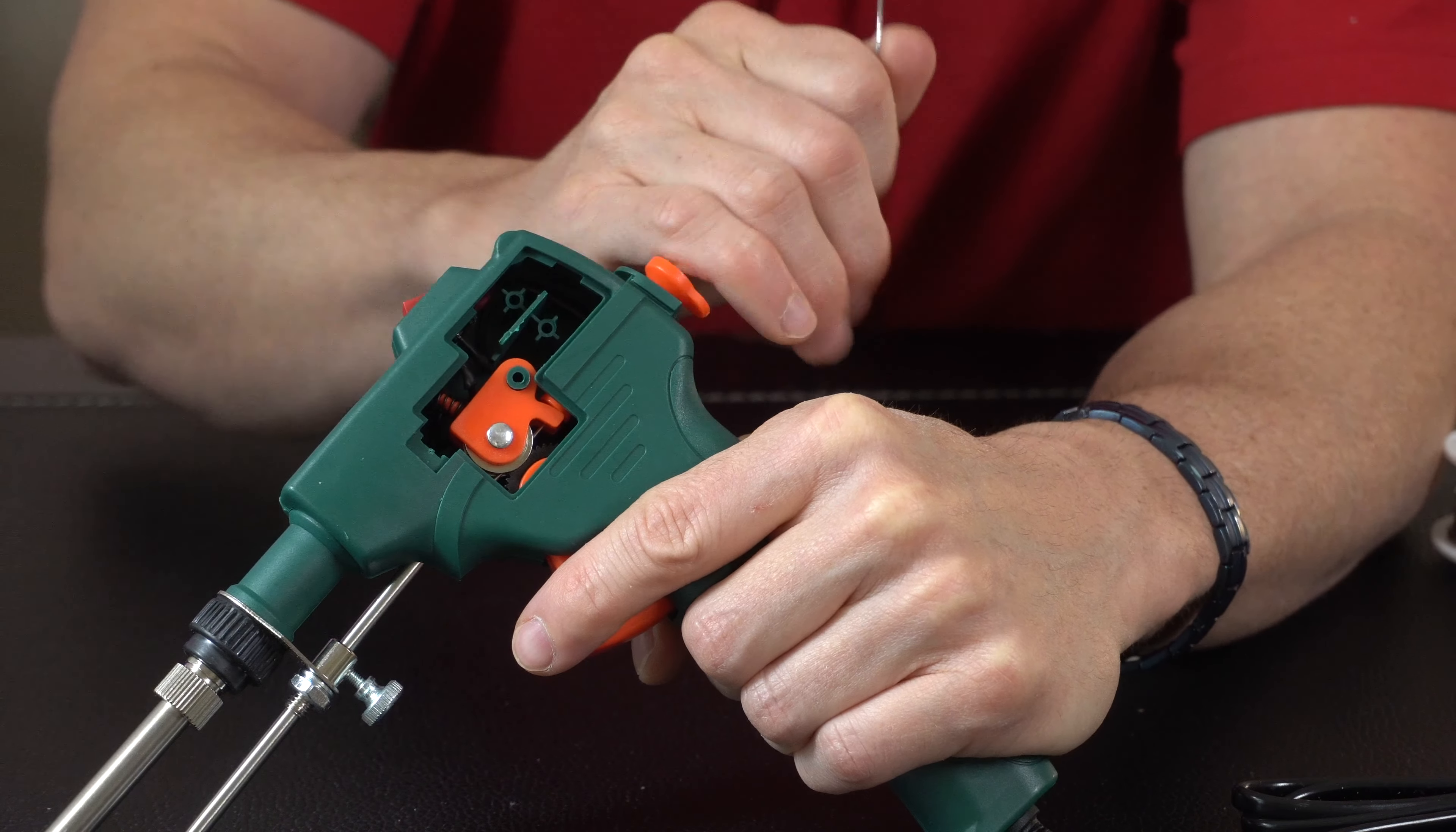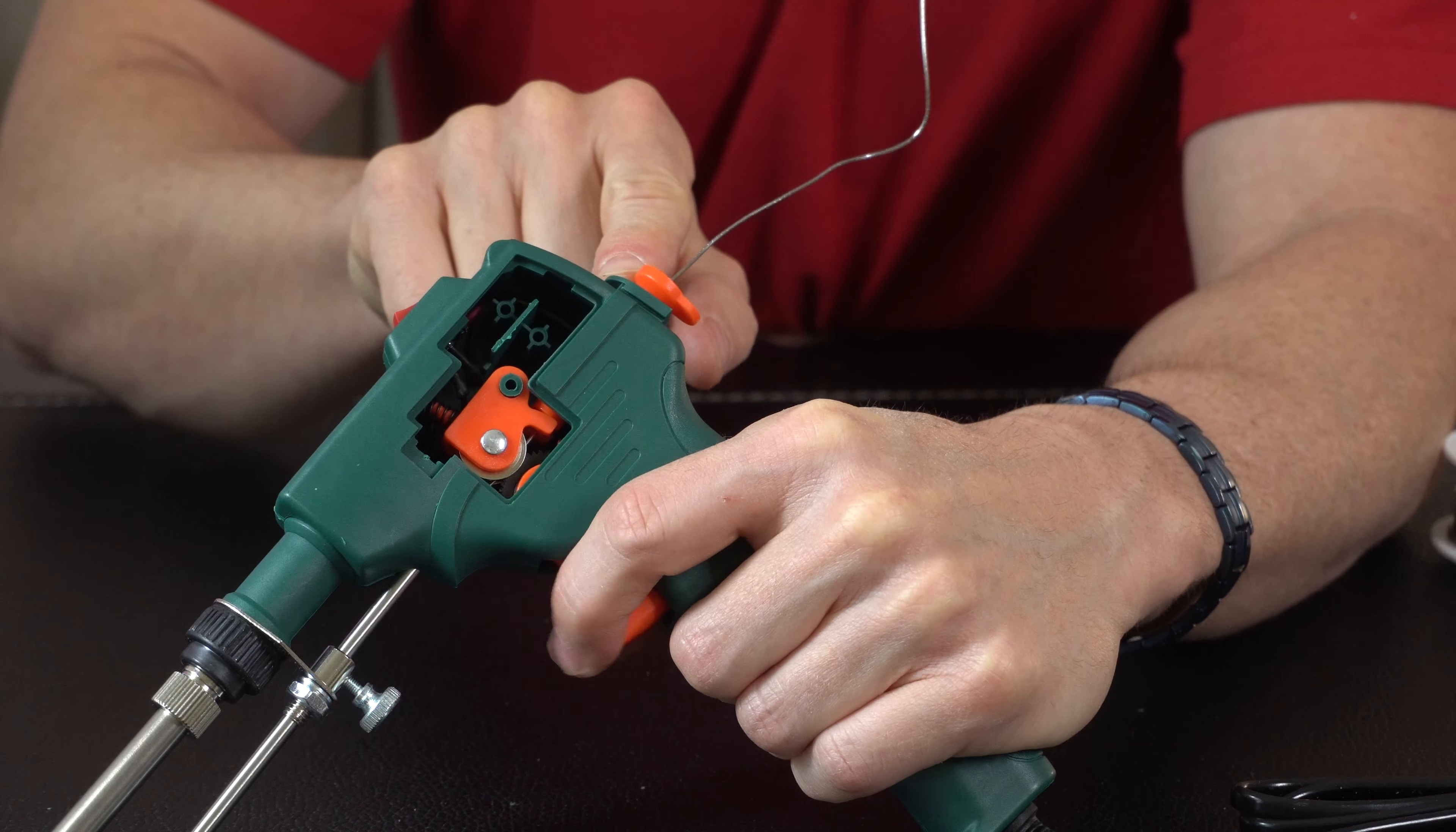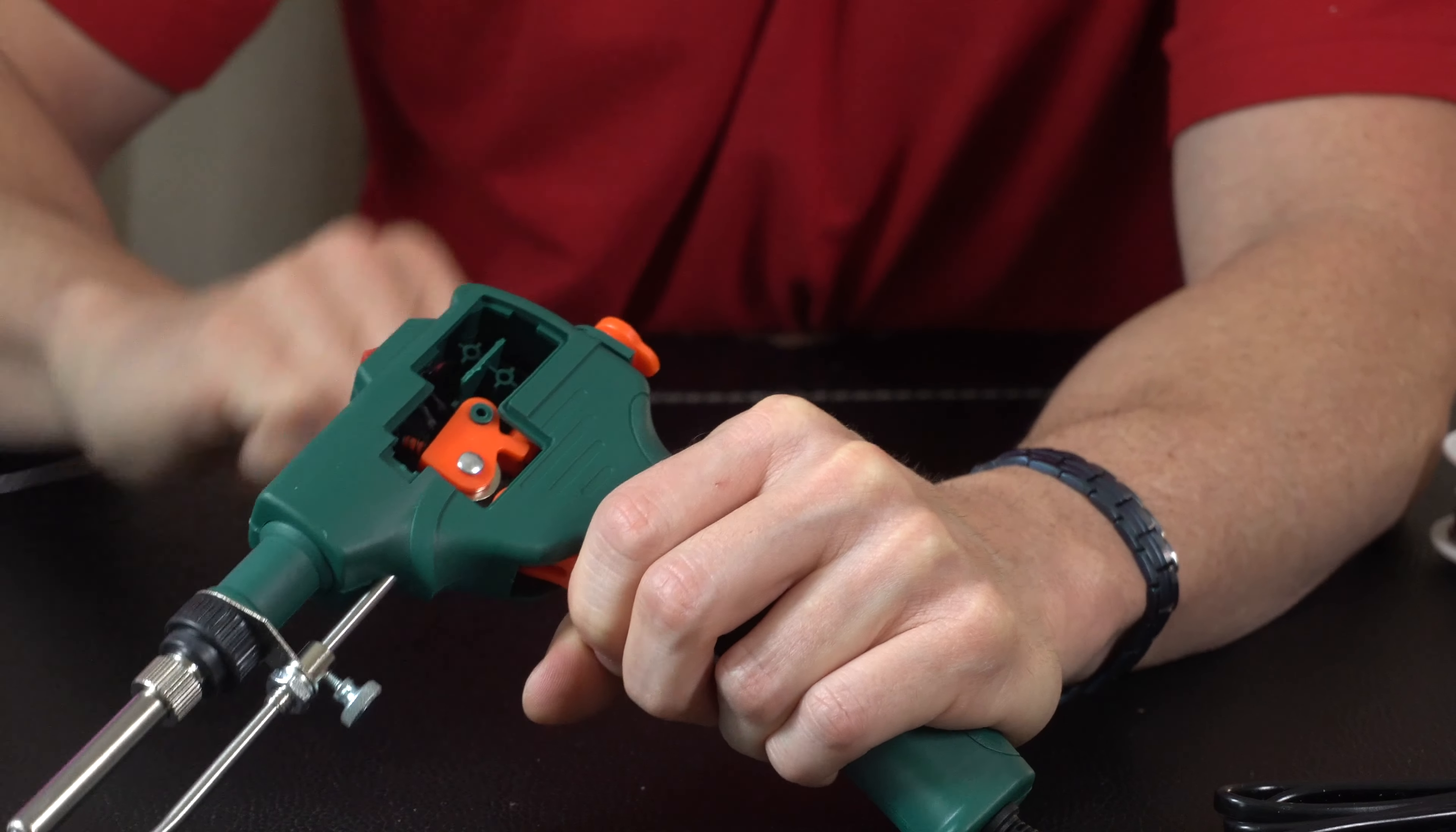Now, if you ever need to remove the solder, don't yank on it because it's being held in there. So what you want to do is hold the trigger down all the way and give it a nice snug grip. And then you'll be able to pull out any of the excess solder nice and easy, and it's not going to break on you.